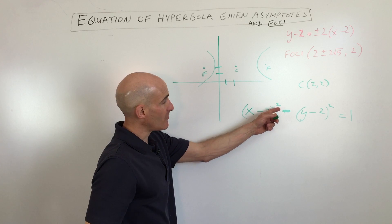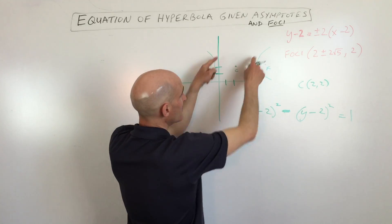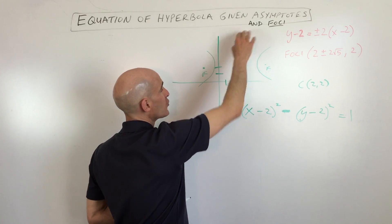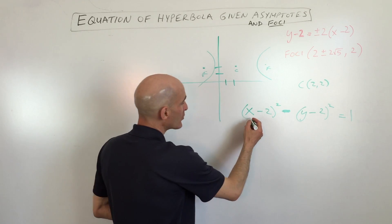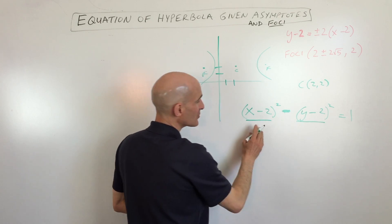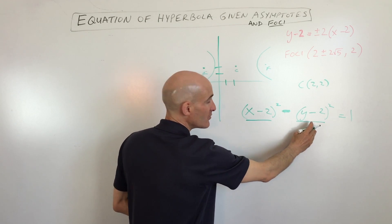The x squared term is the positive term that comes first when it's opening left and right. If the hyperbola is opening up and down, then the y squared term would come first. So are you with me so far? And then what we're trying to do now is we're trying to find the denominators, the a squared and the b squared.